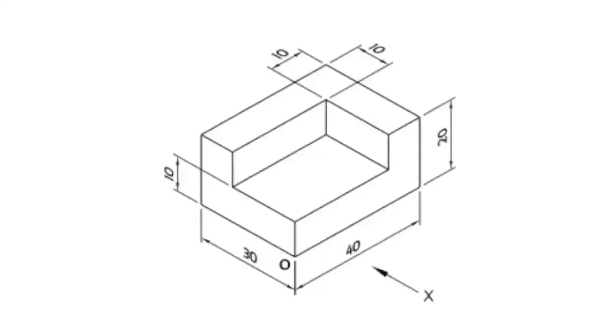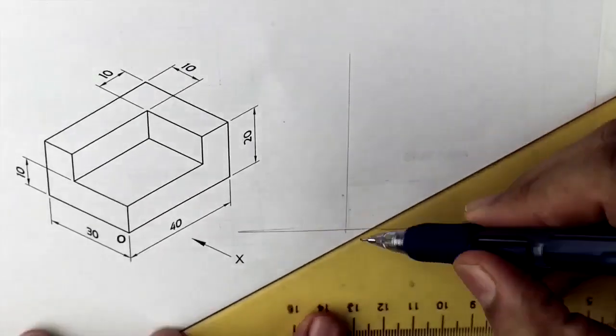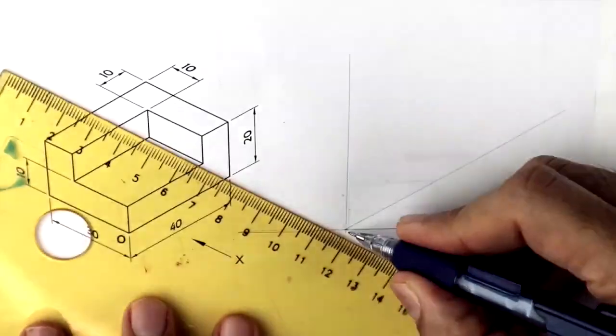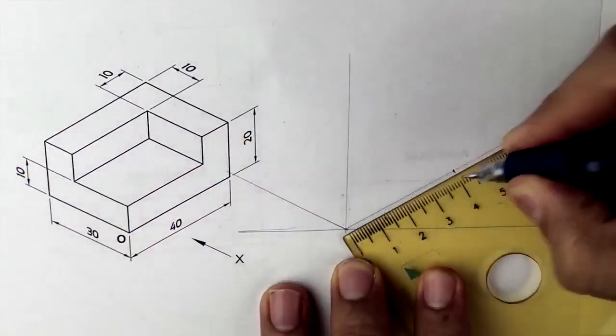Welcome to technical drawing. This is the fifth sum in our series and I hope you people have understood the basic concept of how to draw isometric. Now in this sum we'll take length which is 40, width 30, and height 20.